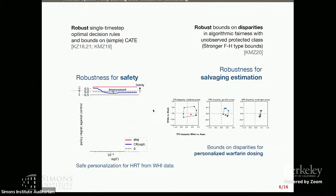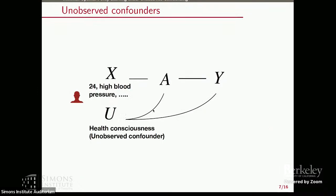There's been a lot of work on this kind of inference across many literatures — sensitivity analysis in causal inference, partial identification in econometrics. I focus on computationally aware approaches to scale up to important applications: personalizing medicine, revisiting the Women's Health Initiative trial, and bounding disparities for personalized warfarin dosing. I'll now dive into minimax optimal policy learning and the central problem of unobserved confounding.